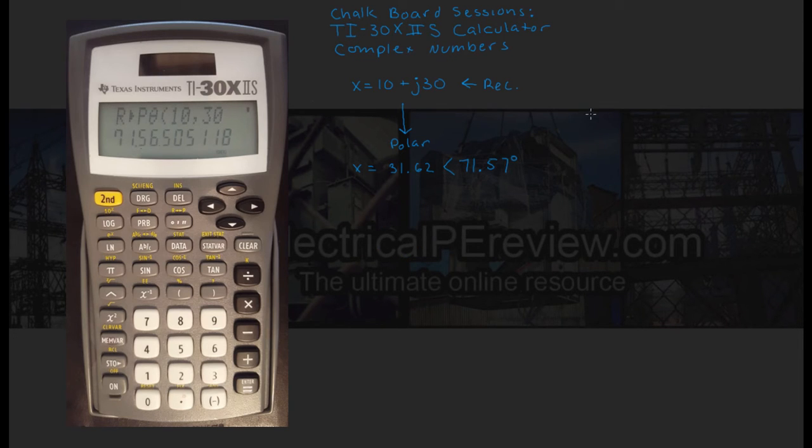Okay let's do another one. This time we're going to start in polar and work our way to rectangular using the calculator. So given a vector y in polar, the magnitude of 120 at an angle of 30 degrees, use the calculator to go to rectangular.